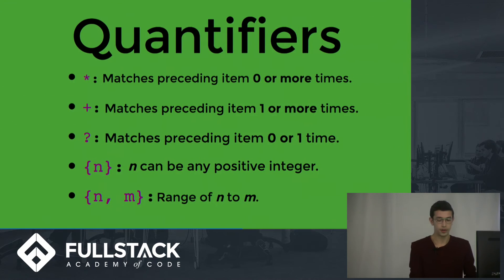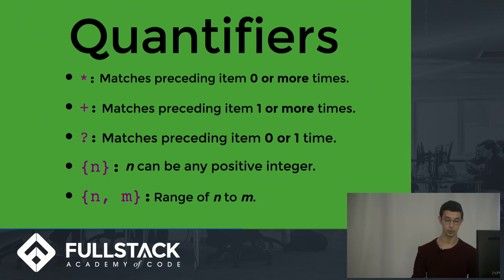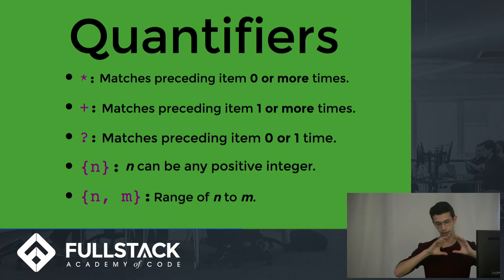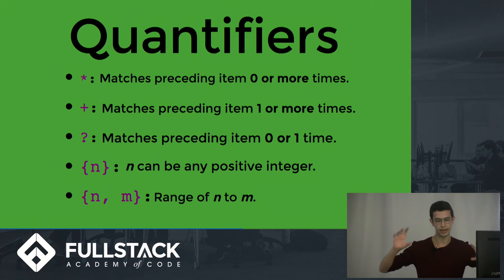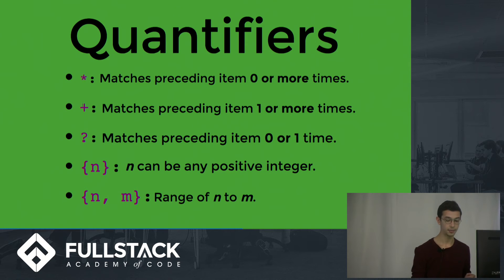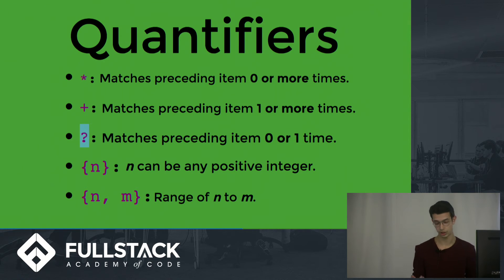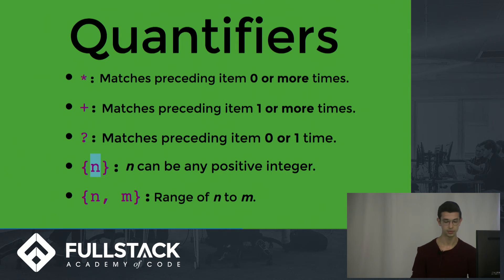Let's talk about quantifiers — a way of quantifying how your pattern matches in the string. The star (*) means match the preceding item zero or more times. Plus (+) means match it at least once — one or more times. Question mark (?) means zero or one times — it's optional. Putting {n} in braces means match exactly n times. You can also do a range {n,m}, or {n,} to mean at least n times.